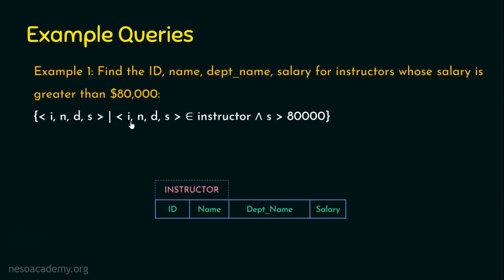I'm going to check that all these domain variables belong to the instructor relation. If we want to retrieve information about all instructors we could stop there, but the query asks for instructors drawing a salary greater than eighty thousand dollars. The domain variable we created for salary is s, so the condition is s greater than eighty thousand. All domain variables belong to instructor and there is an AND condition that s must be greater than eighty thousand. I hope the first example is clear.